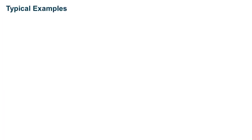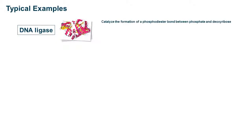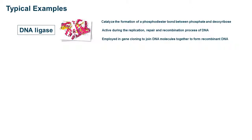A typical example is DNA Ligase, which catalyzes the formation of a phosphodiester bond between phosphate and deoxyribose. It is active during the replication, repair, and recombination of DNA, and is also employed in gene cloning to join DNA molecules together to form recombinant DNA.